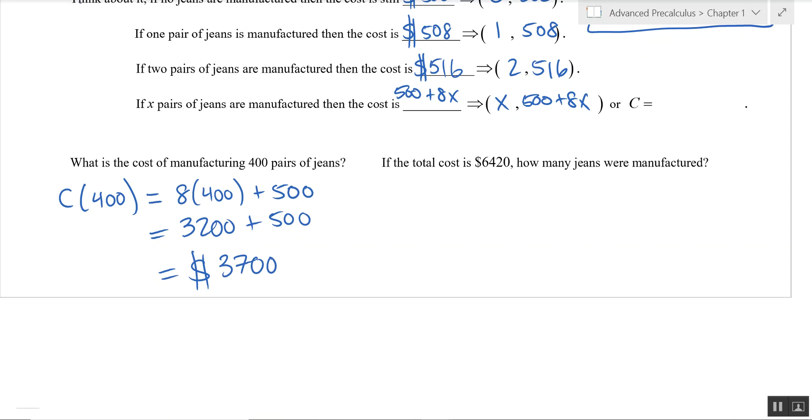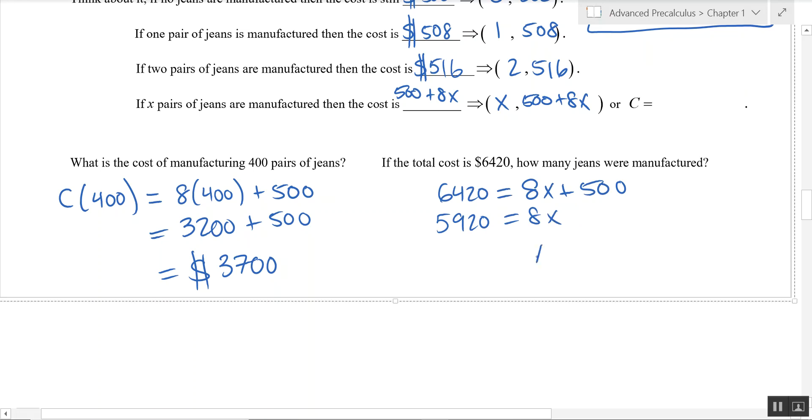All right, now we have a total cost of $6,420. We know that is our total cost. I'm going to plug in everything else. And we'll solve. Subtract 500, we get 5,920. And dividing that by 8, looks like we get 740. Make sure you include units. Let's say 740 jeans. Thank you.